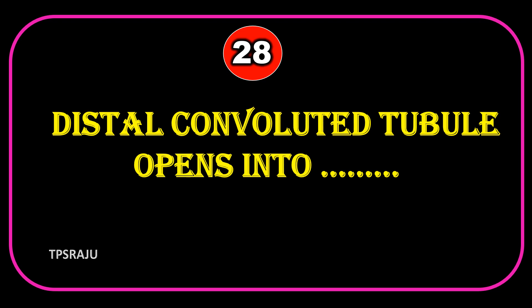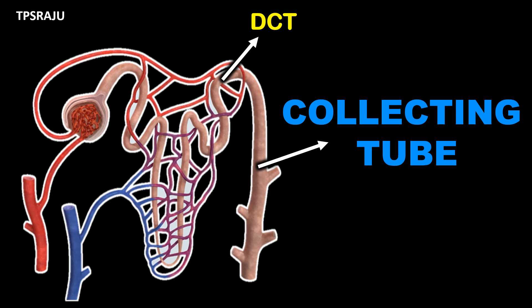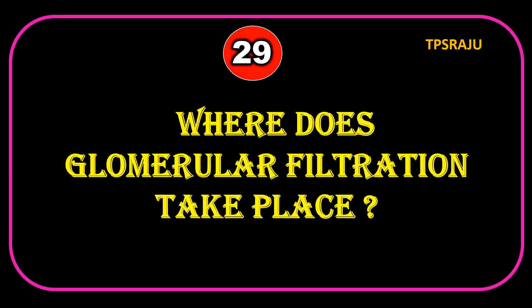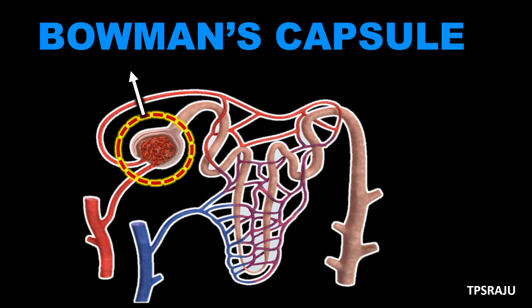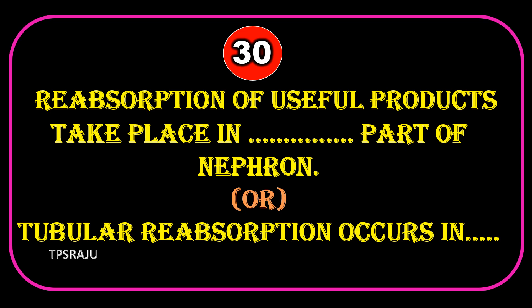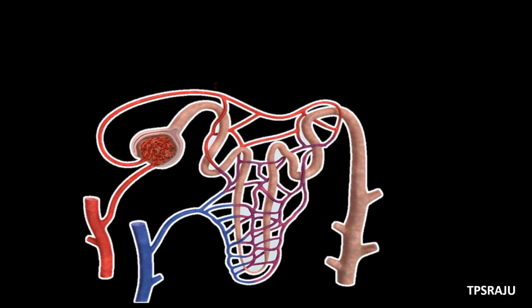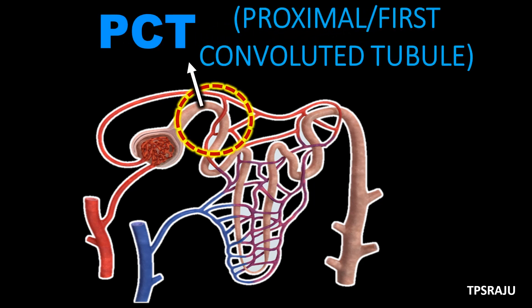Distal Convoluted Tubule opens into the Connecting Tube. Where does Glomerular Filtration take place? Bowman's Capsule. Reabsorption of useful products, or Tubular Reabsorption, occurs in the PCT — Proximal Convoluted Tubule.